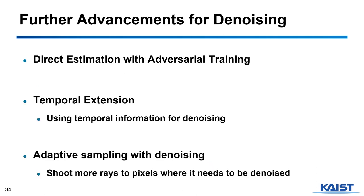To overcome this and other limitations, there are further advancements. We can apply adversarial training to generate denoised pixel radiance directly, which might overcome the dataset limitation. Also, we can utilize multiple frames to use temporal information for denoising, which can be helpful for denoising a whole video or animation. Moreover, denoising can be jointly applied with sampling — through denoising, we can identify pixels with high noise levels and shoot more rays for that particular pixel. This method is called adaptive sampling.